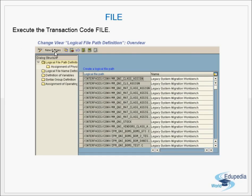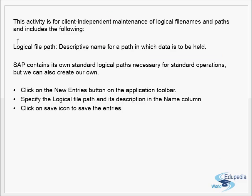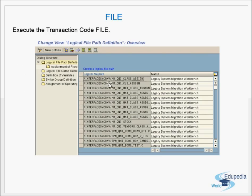You go to the Logical File Path Definition node, click on New Entries, and give the logical file path and a name. This is a logical name — it doesn't exist at the OS level — and you give a description. Then you click the save icon to save the entries.